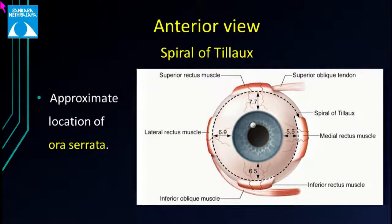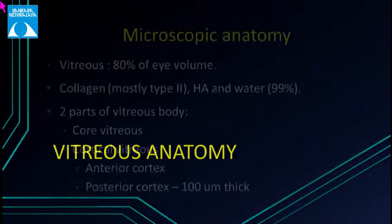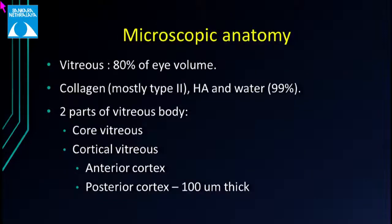This is surface anatomy of surgical importance. The spiral of Tillaux is a spiral formed when we join the insertions of the four recti, and it approximately marks the location of the ora serrata. The vitreous consists of 80% of the eye volume, consisting mostly of type 2 collagen, hyaluronan, and 99% water.